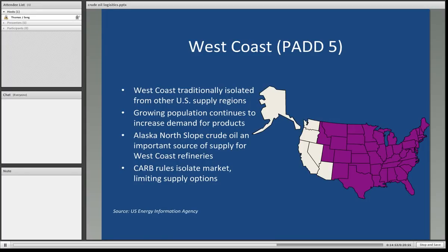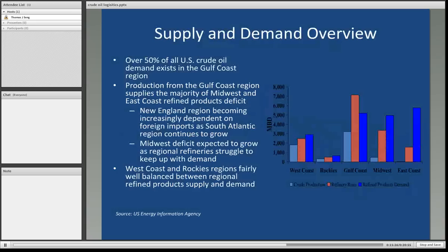PAD 5 encompasses the West Coast and Alaska. The West Coast is traditionally isolated from other U.S. supply regions by the Rocky Mountains. The growing population continues to increase demand for various refined products. The Alaska North Slope crude oil is an important source of supply for West Coast refining, brought down via the Alaska pipeline to the lower 48 states. California's emissions rules isolate that market, limiting supply options — gasoline and diesel fuel must meet very stringent standards in the state of California.